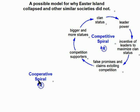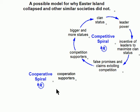This force is going to oppose the competitive spiral as we build the model. Let's start building the loop — it obviously needs several parts like the other one. The most obvious is it needs a counterpart: cooperative supporters. Likewise, we need a counterpart to false promises — we need true promises.